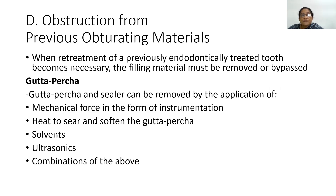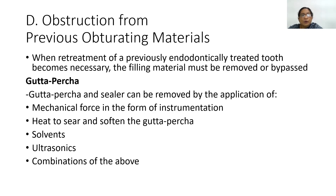The fourth procedural error is obstruction from previous obturating materials. When retreatment of a previously endodontically treated tooth becomes necessary, the filling material must be removed or bypassed. Gutta-percha and sealer can be removed by mechanical instrumentation, heat to soften the gutta-percha, solvents, ultrasonics, or combinations of the above.